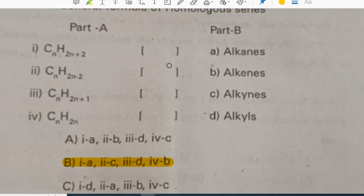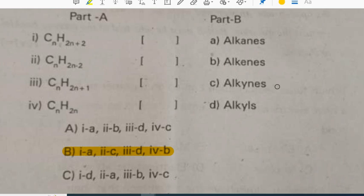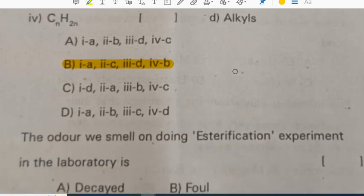Match the following organic compound formulas: CnH2n+1 is alkanes; CnH2n-2 is alkynes; CnH2n+1 is alkyls; and CnH2n is alkenes.